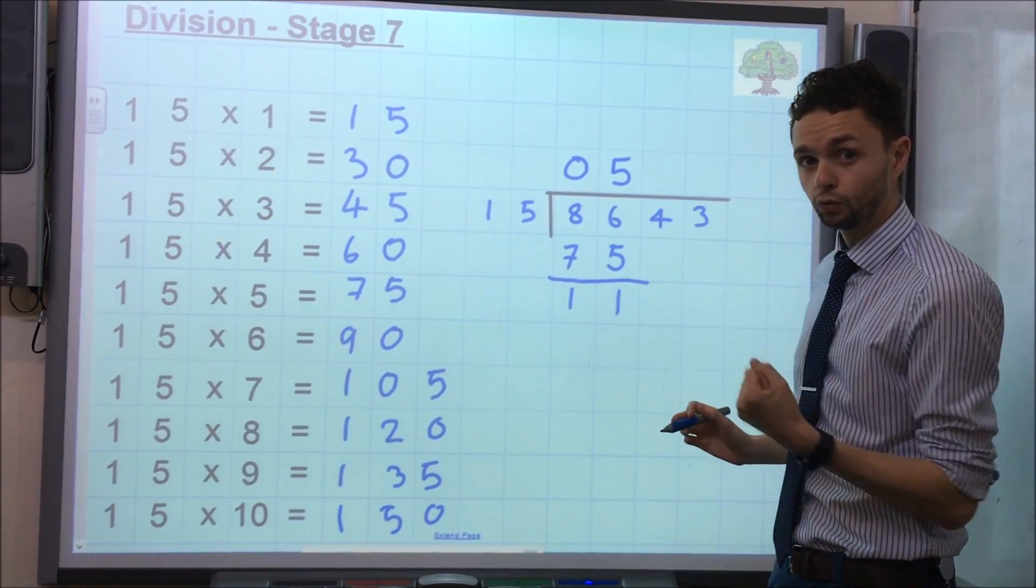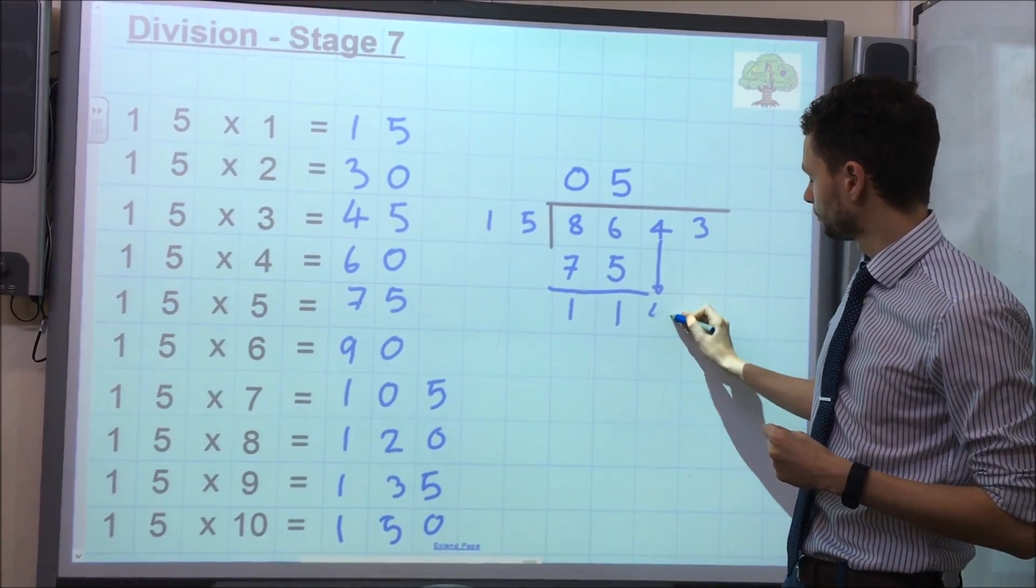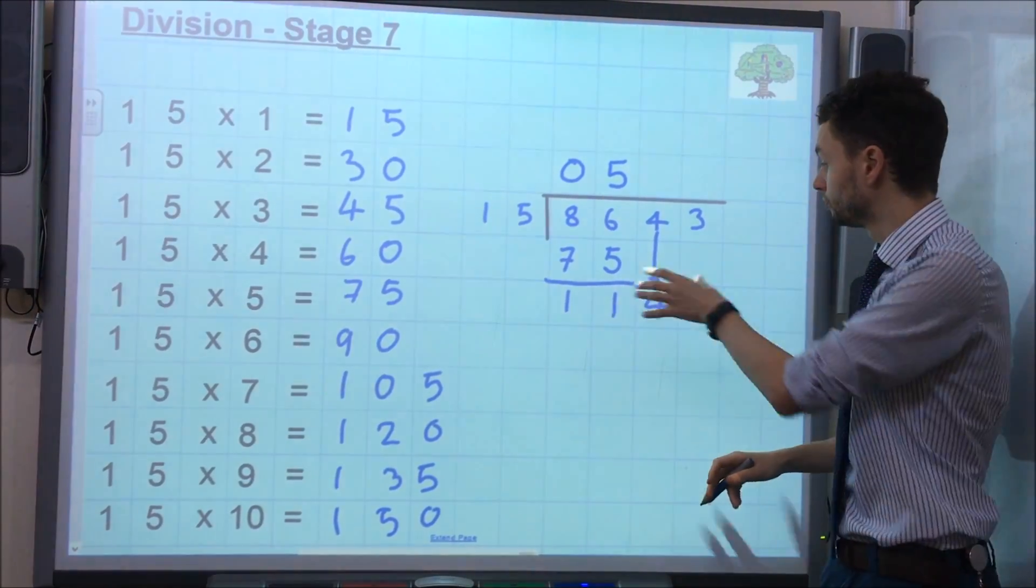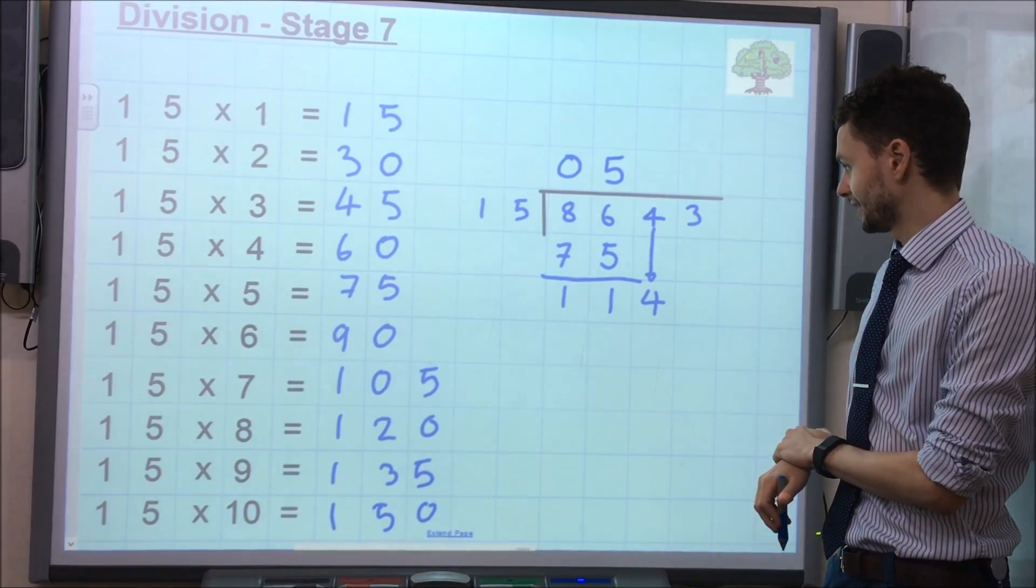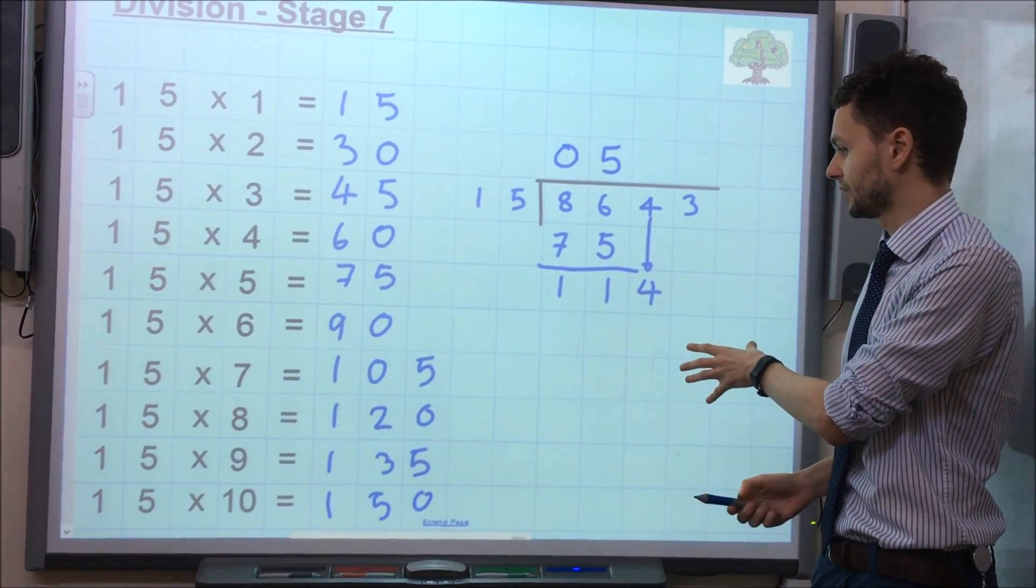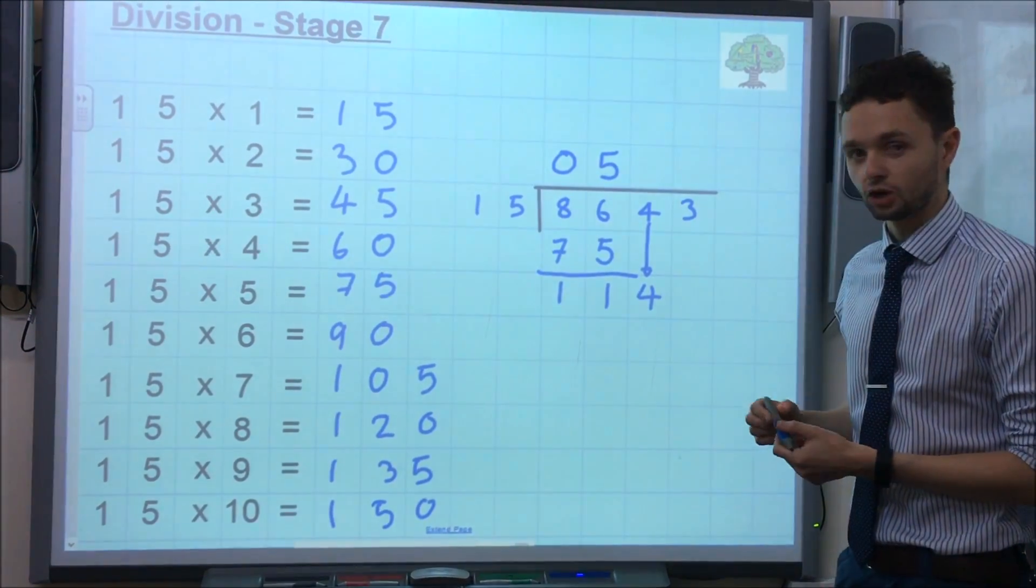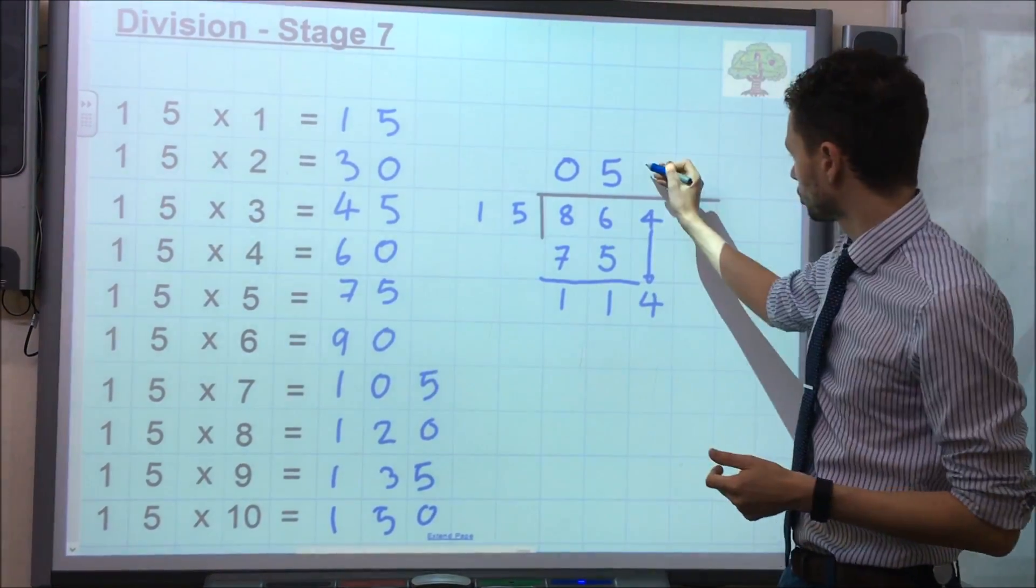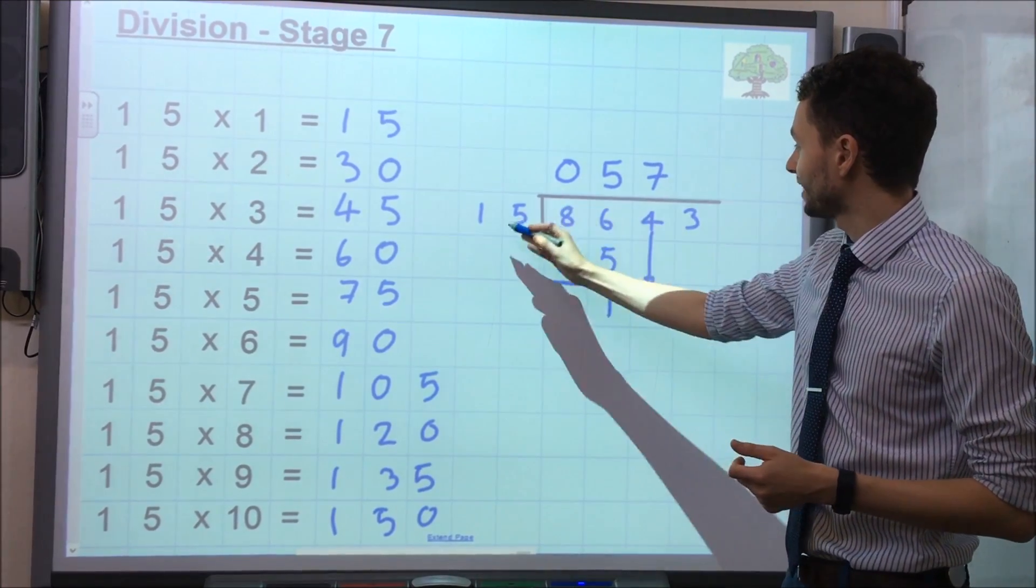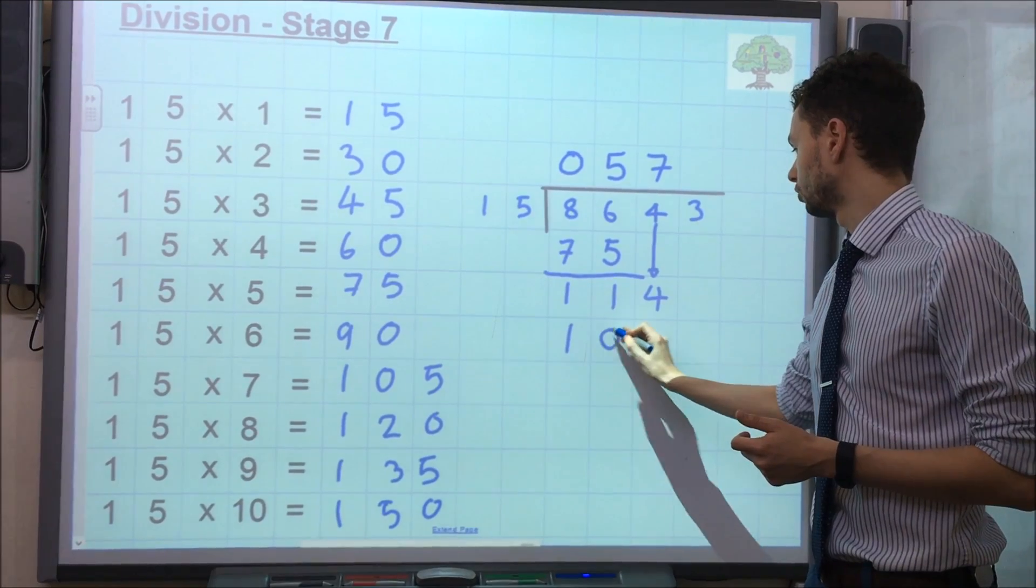The next stage now is to pull down the next number. So, this 4 here, we pull down and that now becomes 114. Then we ask how many 15s go into 114. We look at our times table facts, we can see it's 15 times by 7. So that 7 goes at the top and then the answer to 15 times by 7, which is 105, that goes underneath.